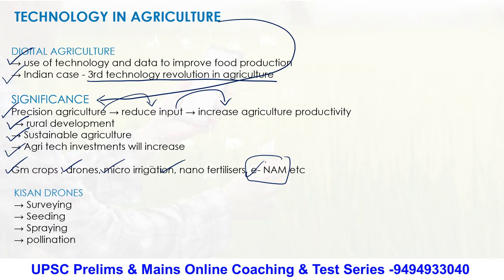The World Economic Forum focuses primarily on using drone culture or drone technology in agriculture. The importance of Kisan drones is that they help in surveying, seeding, and spraying pesticides in the proper required amount. They also help in pollination. These drones take care of all the things required because a farmer often doesn't have awareness of what amount of fertilizer or pesticides should be used.